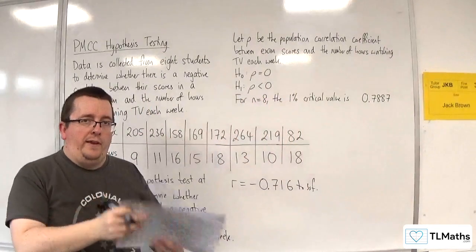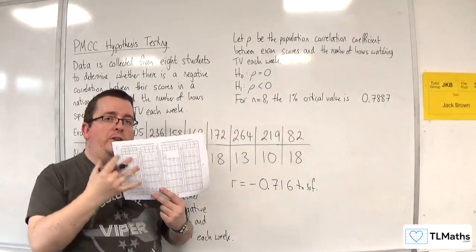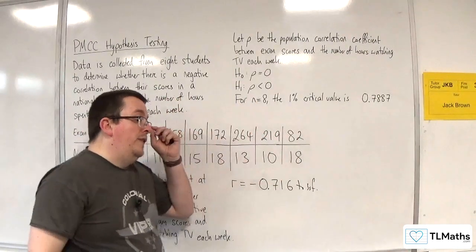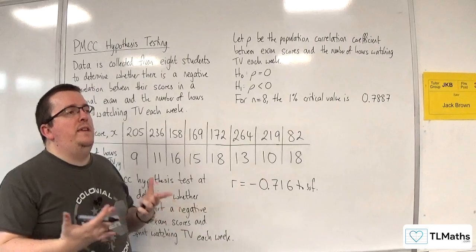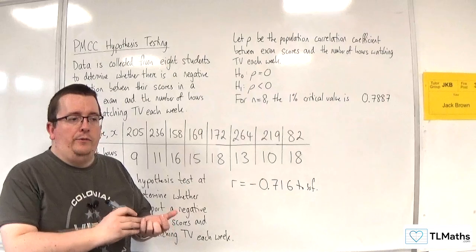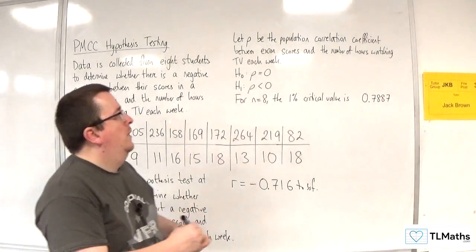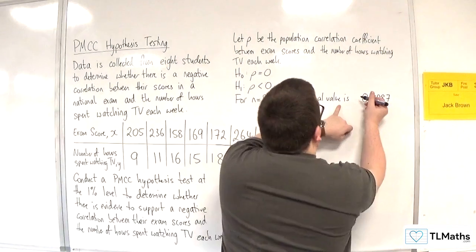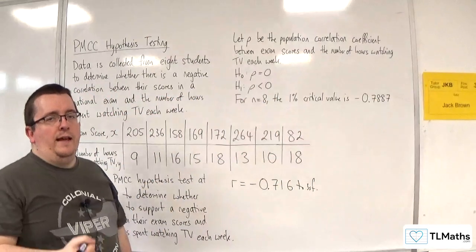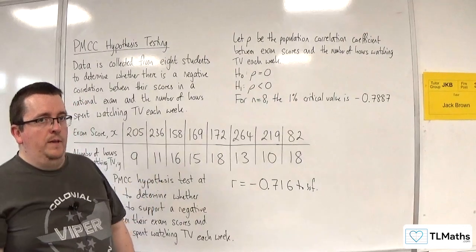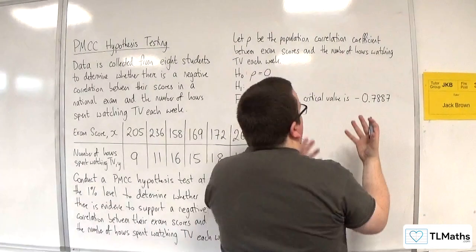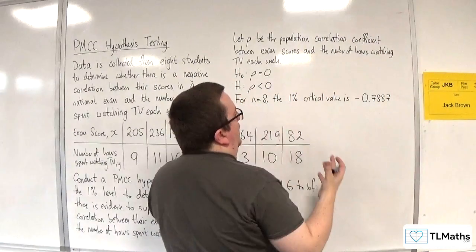Now, you'll notice that there are no values in your table that are negative. Now, the reason for that is that there's no point giving you two tables, one positive, one negative, and it's just all the same values. So the 1% critical value that we're needing to work with is minus 0.7887, because we're looking at the other tail. So think of it like a mirror image, the symmetry of the PMCC between minus 1 and 1.